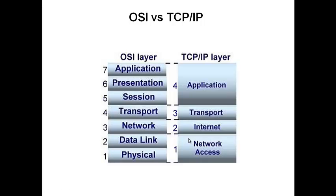Instead of the network layer, we now have the internet layer, followed by transport — which remains the same — and then the application layer. It's not that anything has changed fundamentally; the layers have simply been simplified. OSI evolved into TCP/IP. Hopefully you've learned something from this video — please subscribe for more content.